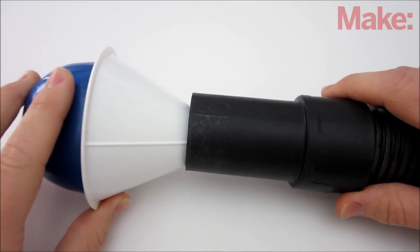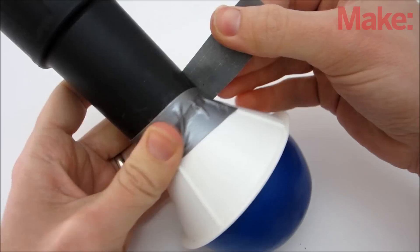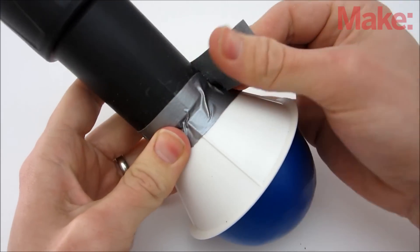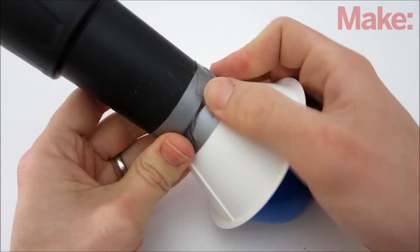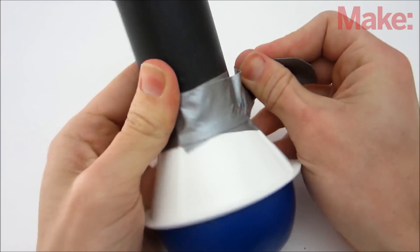Finally, we need to attach the funnel to an air hose. The easiest way to do this is to just hold the funnel up to the air hose and wrap them both in a generous amount of tape. You want to make the seal as airtight as possible.